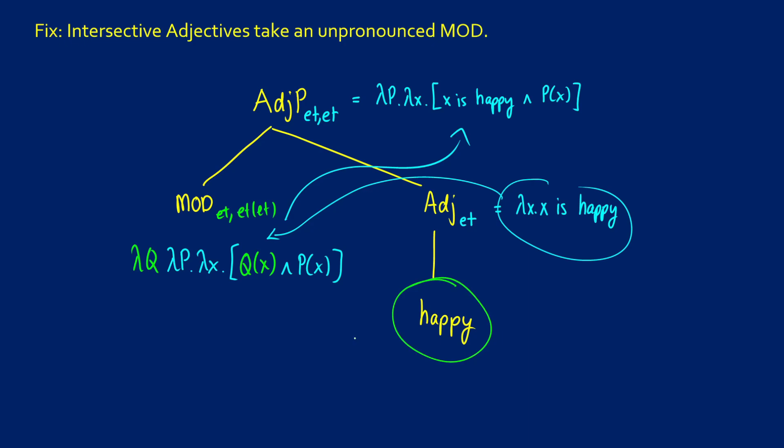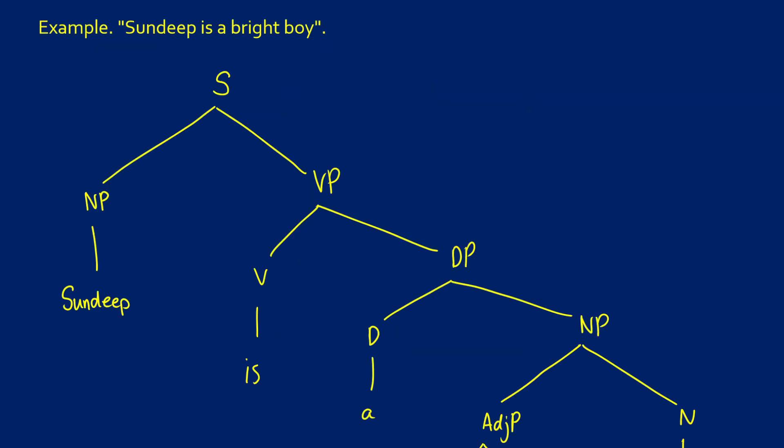So now what we can do in a tree is if happy is just on its own, it's not being a direct modifier, like it's not occurring immediately before the noun as an intersective adjective, we leave it as is. But if we want it to get its intersective meaning within a noun phrase, we apply the intersective modifier and we get our new ET ET out of it to be compatible.